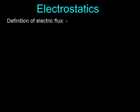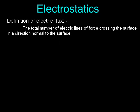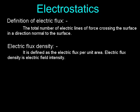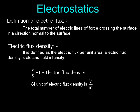Electric flux is defined as the total number of electric lines of force crossing a surface in a direction normal to the surface. Electric Flux Density: It is defined as electric flux per unit area. Electric flux density = φ / S = E. The SI unit of electric flux density is V/m.